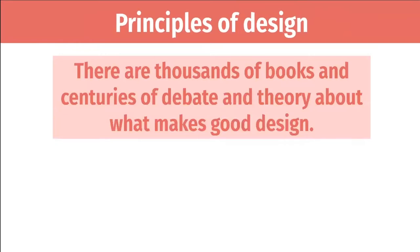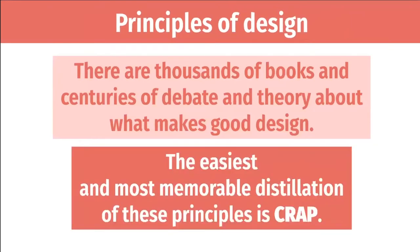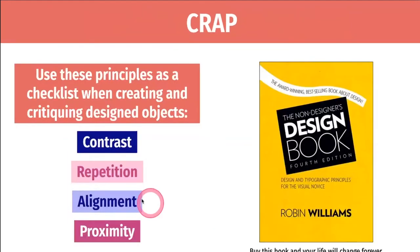Rather than making you read thousands of books over centuries, we're going to distill these principles into four — and they make a convenient acronym: CRAP. You basically want your design to look like CRAP. These four principles stand for Contrast, Repetition, Alignment, and Proximity. The neat thing is that it's essentially a checklist you can go through. Anytime you see a designed object — a flyer, a book, an article, a movie — you can start running through this checklist: How does this do with contrast? Is there a lot? Is it weak? What could be improved?